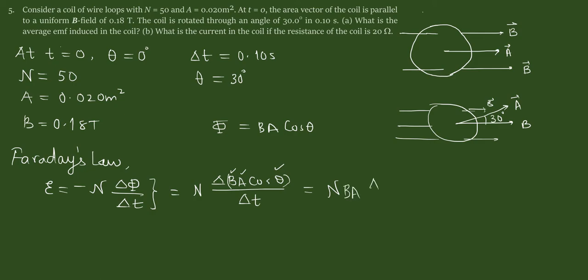So that means we have n B A times delta cosine theta over delta t. Now we can plug in the numbers. So n is 50.